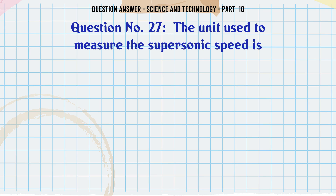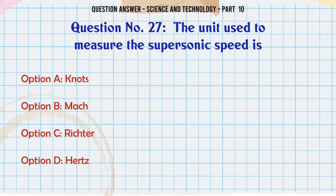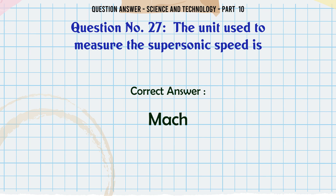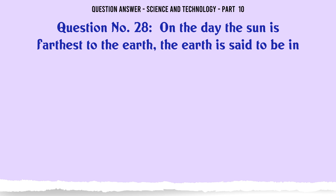The unit used to measure the supersonic speed is. A. Knots. B. Mach. C. Richter. D. Hertz. The correct answer is Mach.